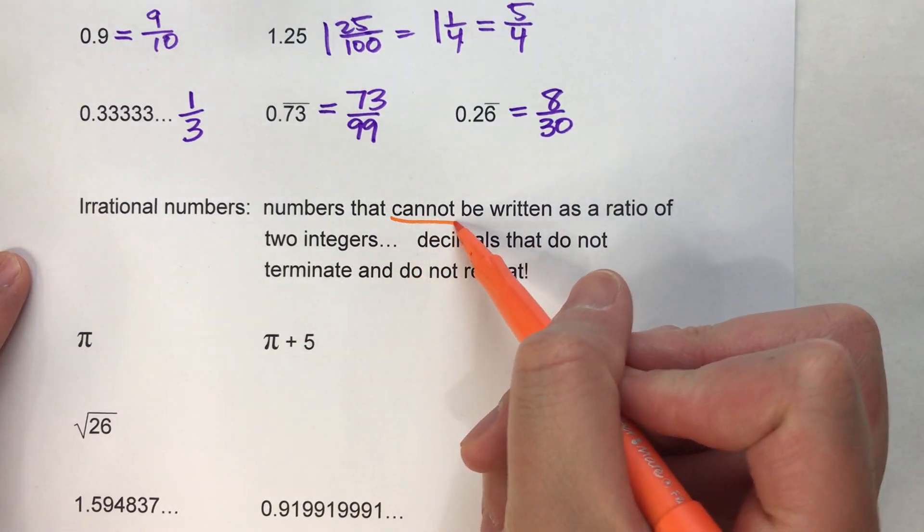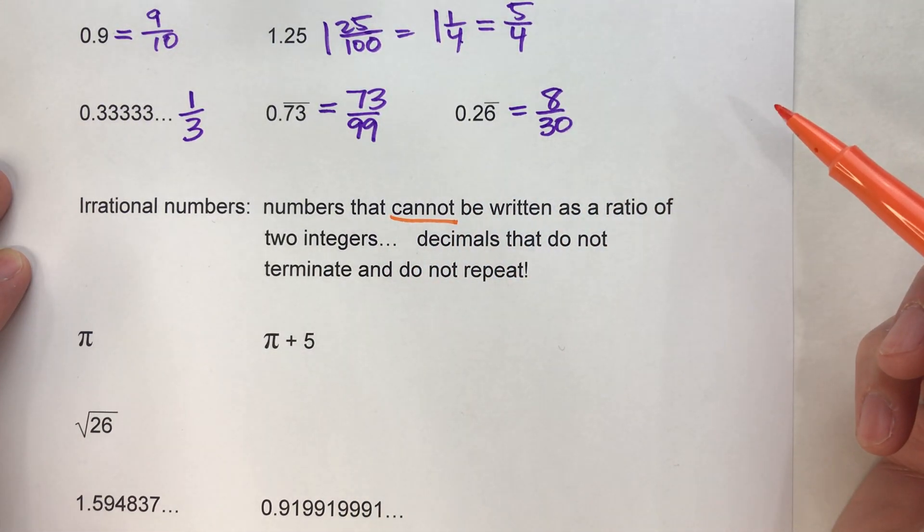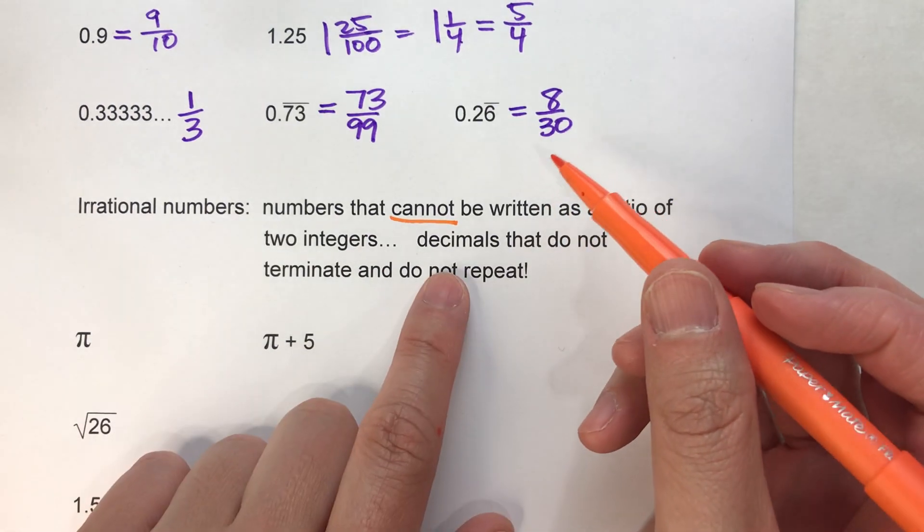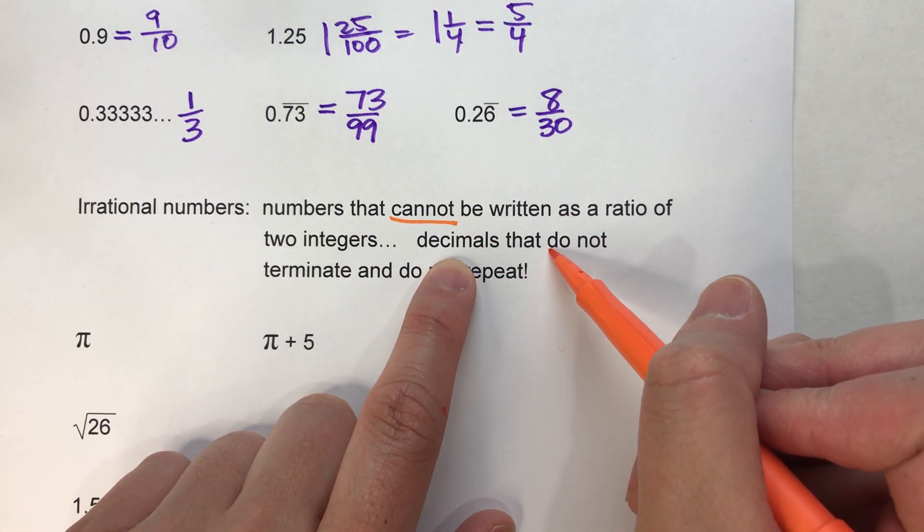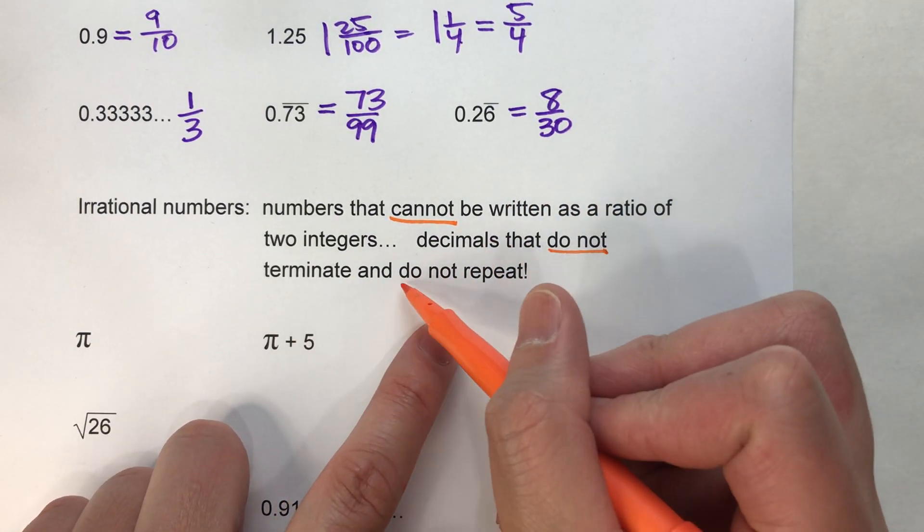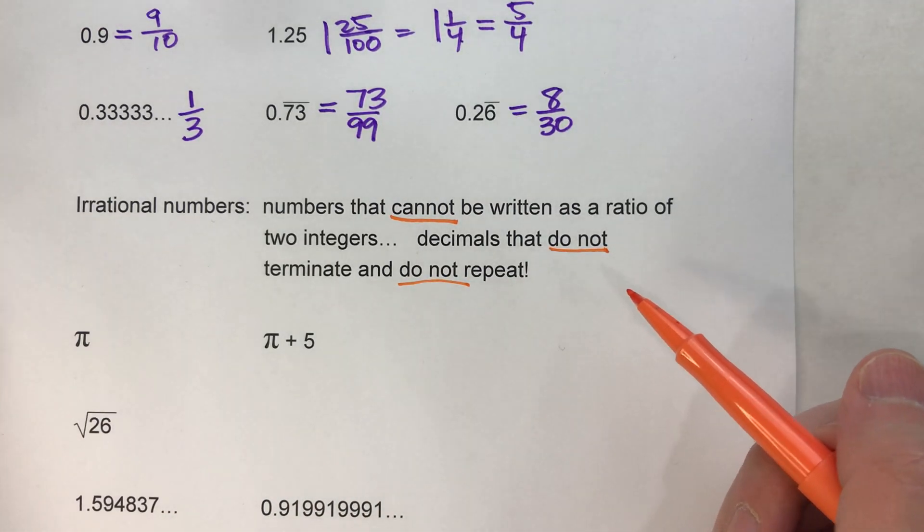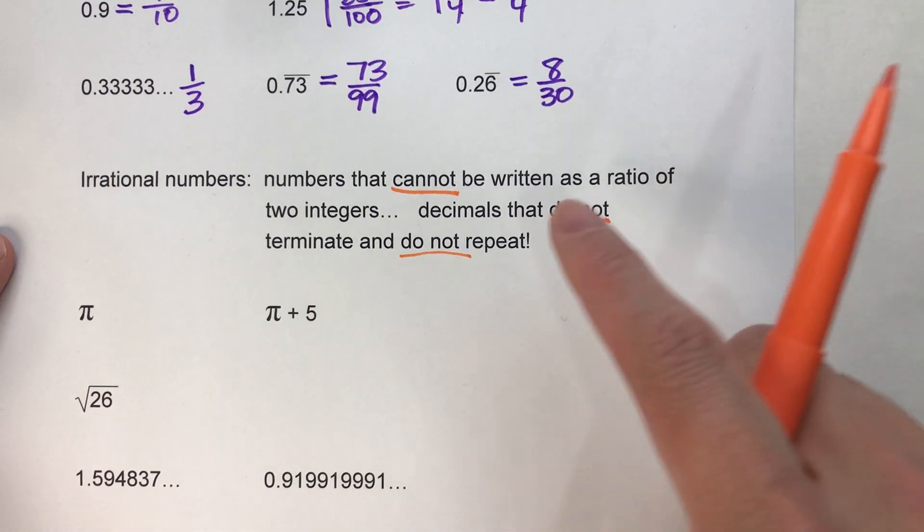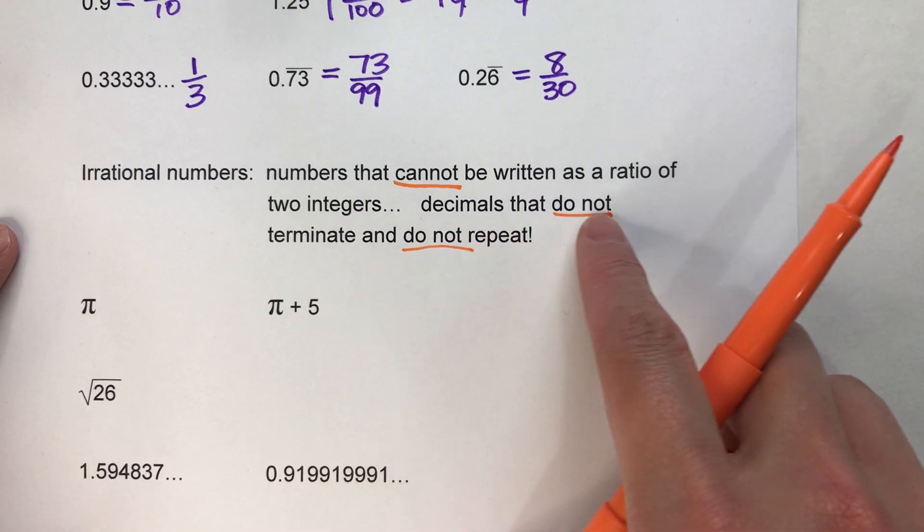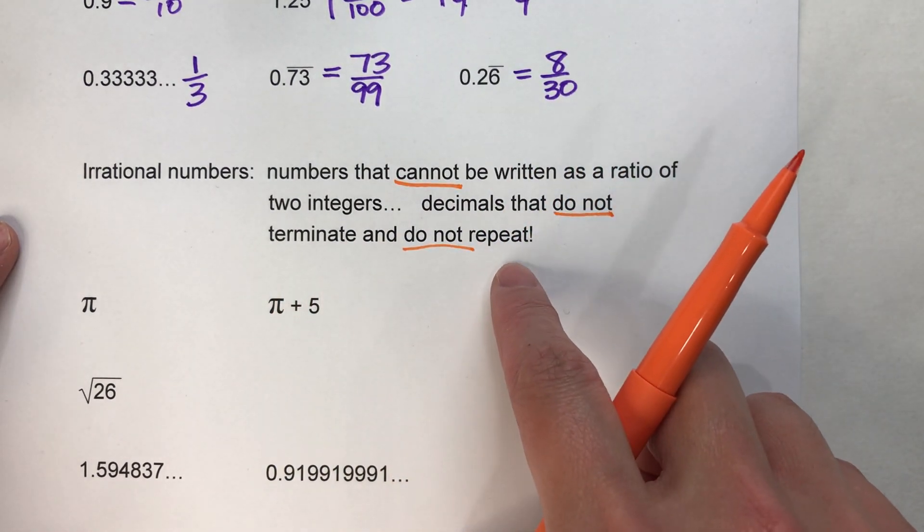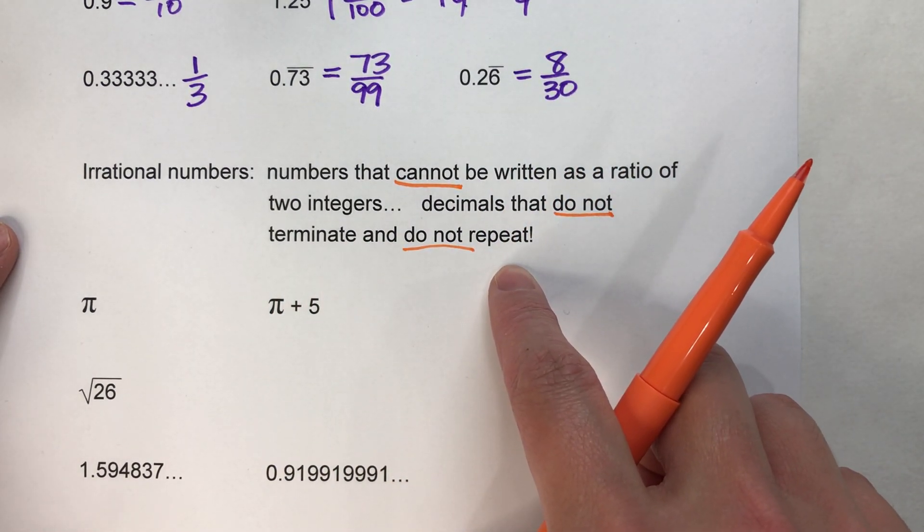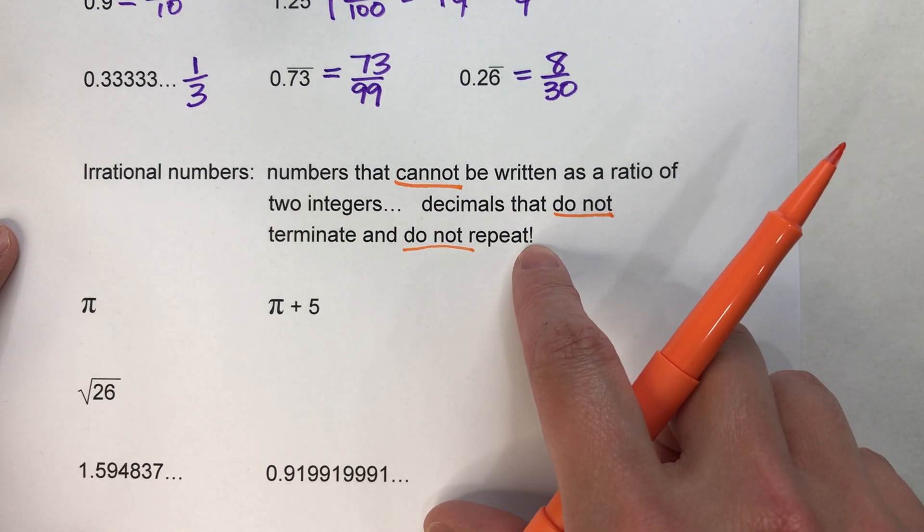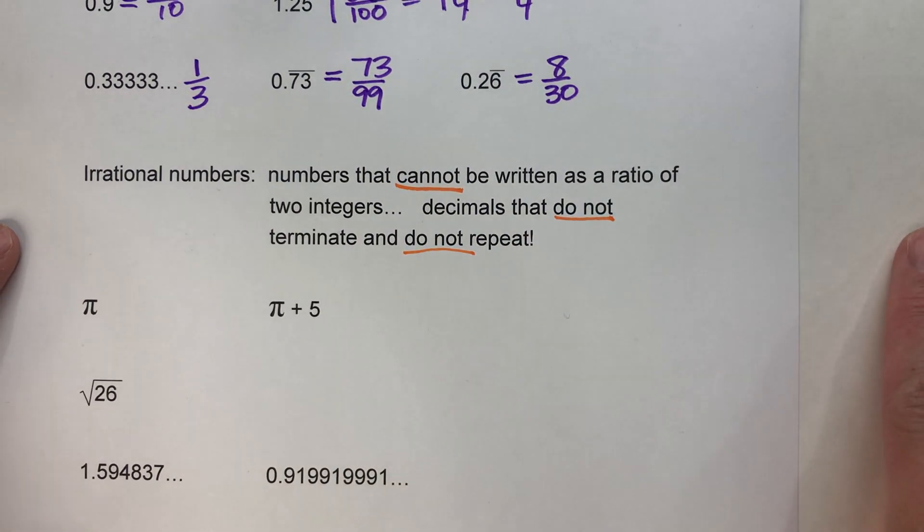Now, what numbers can't be written as a fraction? Turns out, they're decimals that do not terminate and do not repeat. So if you have a number that's a decimal that goes on forever but doesn't repeat, then it's irrational. You cannot write that as a fraction.